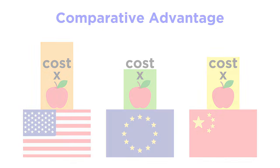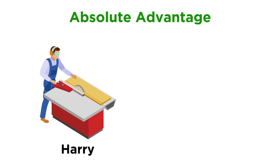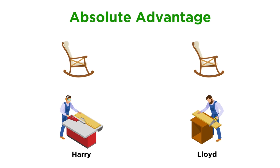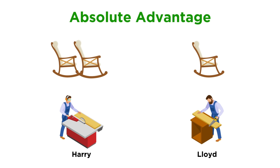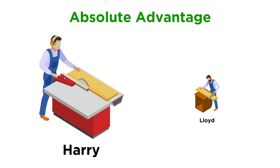First, let's look more closely at absolute advantage. Say you have two people, Harry and Lloyd. They are both carpenters, and to keep things simple at first, let's say they both build rocking chairs. If Harry can build two chairs in a day and Lloyd can only build one, it is certainly the case that Harry has an absolute advantage over Lloyd.